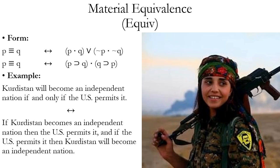If we look at the wedge version, the first disjunct is P dot Q — so you're saying P and Q are true. The second disjunct is the conjunction of the negations of those. This makes sense logically because what the triple bar means — what if and only if means — is that either they're both true or they're both false.